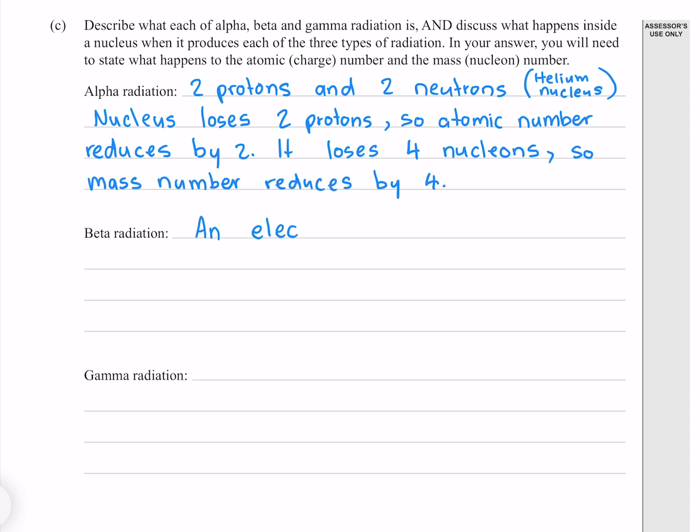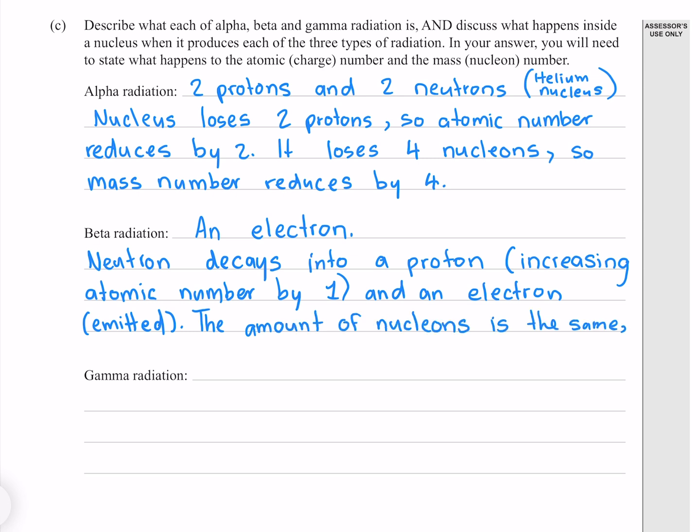Beta radiation is an electron. A neutron decays into a proton, increasing the atomic number by one, and an electron, which is emitted. The amount of nucleons is the same, so the mass number is unchanged.